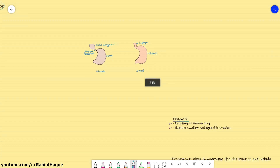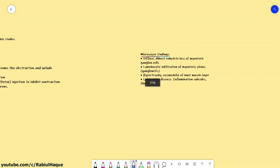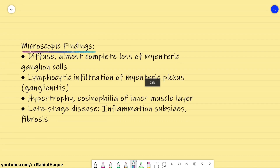What are the microscopic findings? There will be diffuse and almost complete loss of ganglion cells in the myenteric nerve plexus. There will be lymphocytic infiltration of the myenteric nerve plexus, also referred to as ganglionitis. There may be hypertrophy and eosinophilia of the inner muscle layer, and in the late stage, inflammation subsides and there is fibrosis.